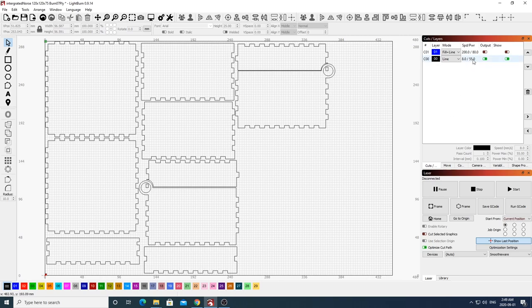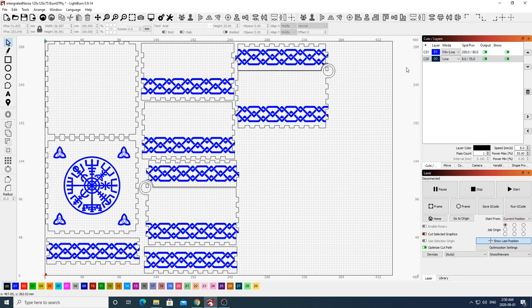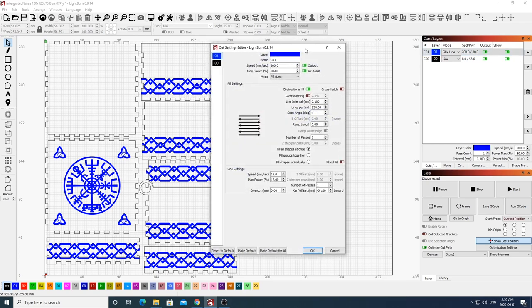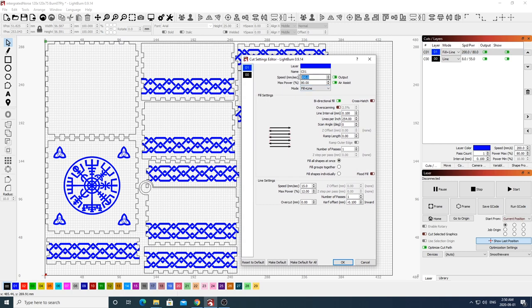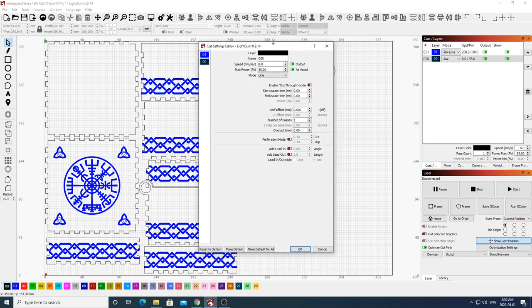I've also went ahead and laid out the Norse design elements that we're going to engrave into this box on another layer. For the engraving of the elements we'll be doing that at a speed of 200 and a power of 80 on my 50 watt machine. We'll have the line speed set to 15 and the line power set to 12, and we'll have the kerf offset set to a negative 0.1.